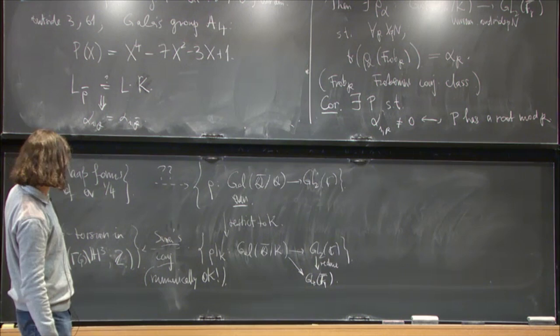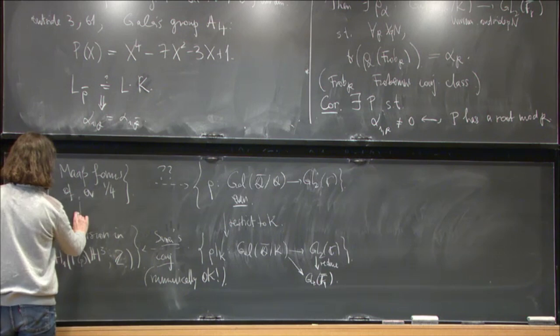And precisely such examples. Any P. So you can reduce this representation to GL2 FP bar for any P. And then maybe you have to increase the level at P a bit, but then it should contribute some P torsion in the integral homology.